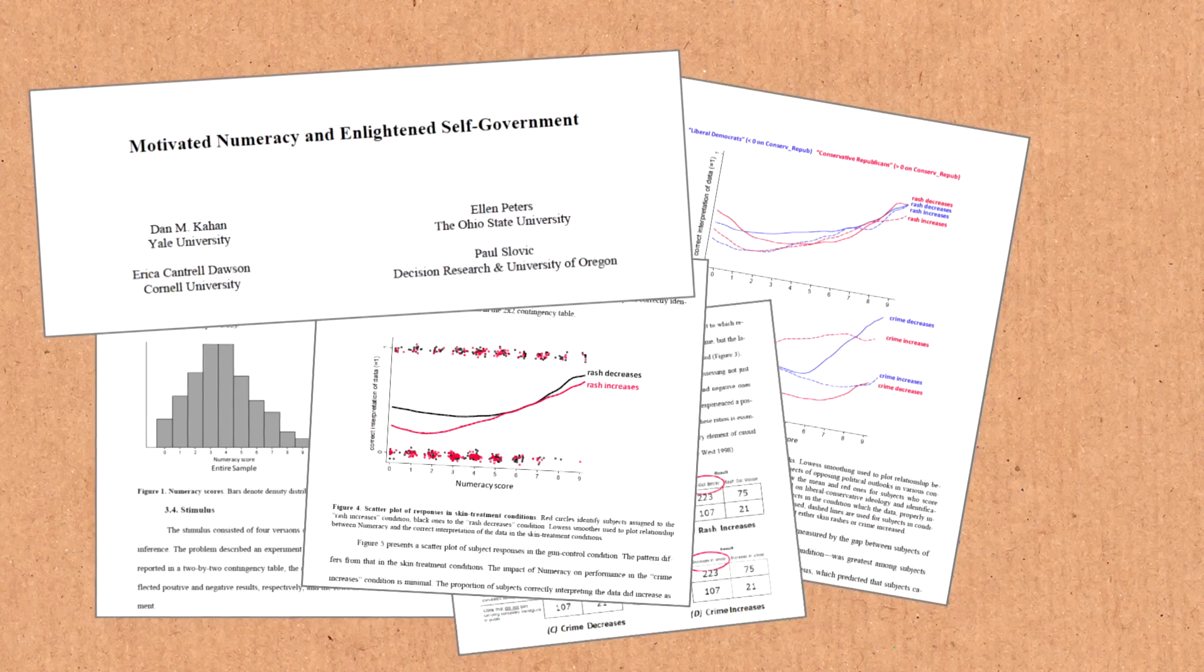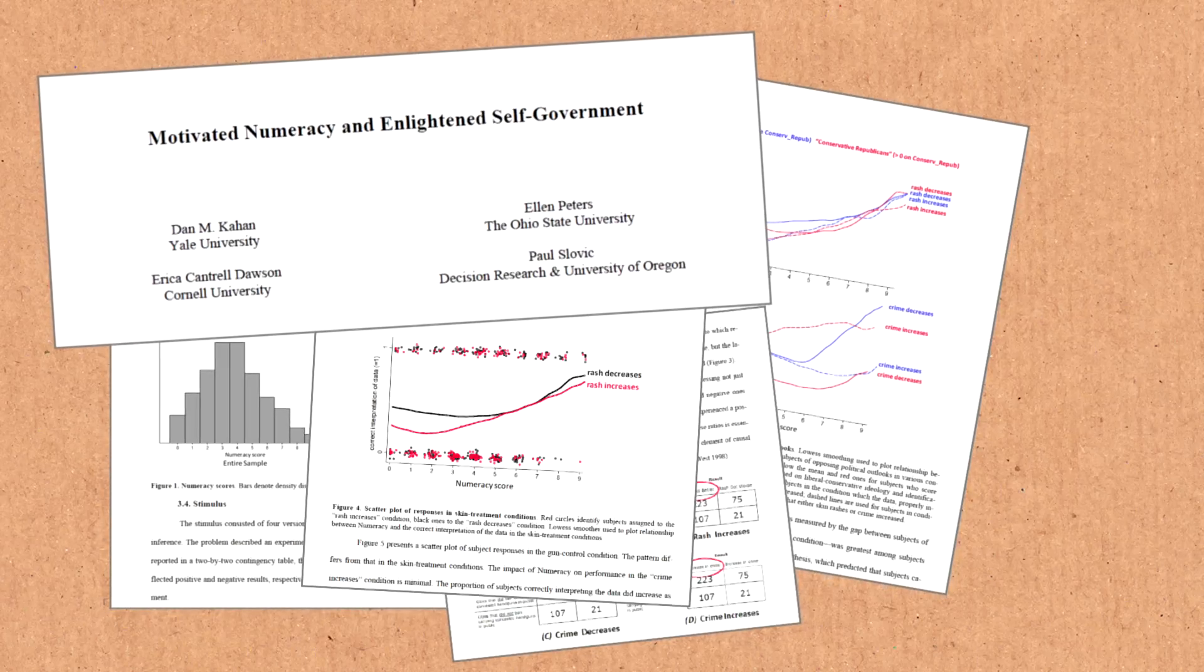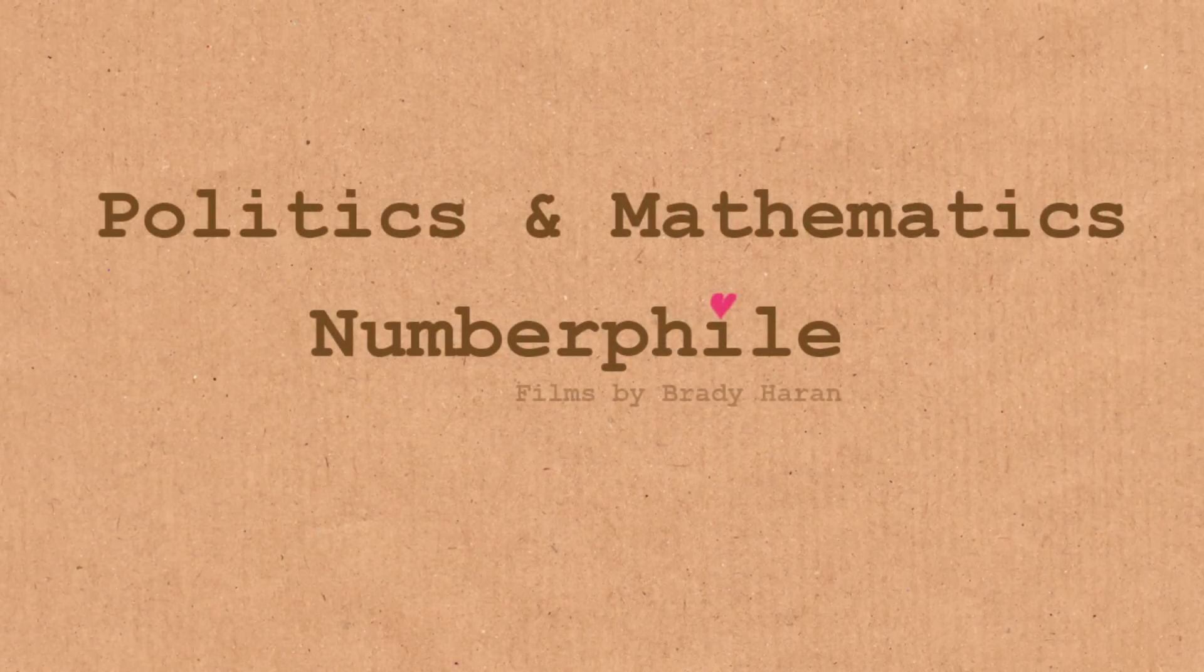This was a recent study that has discovered that people's politics, people's preconceived beliefs, are actually affecting their judgment and they measured this by giving them a maths problem to try. So let's have a look at what they did. This study was done by Dan Cairn of Yale University and others and they took 1,111 people and they measured how good they were at maths and they measured their politics. Are they sort of left-leaning people or are they right-leaning people?